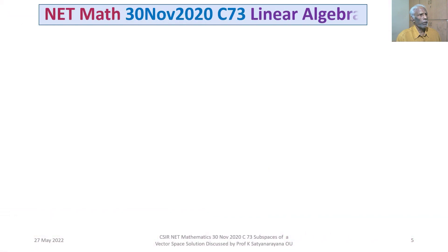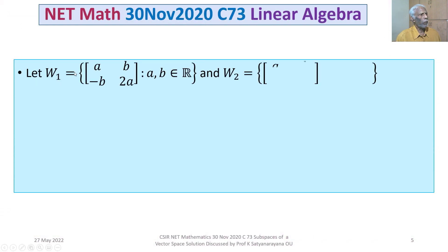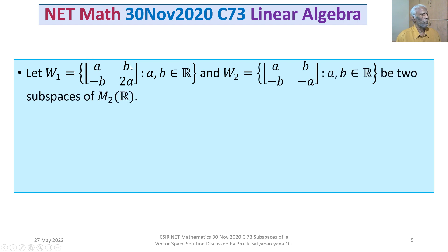The problem is: let W1 be the set of all 2×2 matrices of the form [A, B; -B, 2A] where A, B belong to the set of real numbers. And W2 is the set of all 2×2 matrices of the form [A, B; -B, -A] where A, B belong to R. Both are subspaces of M2 over R.